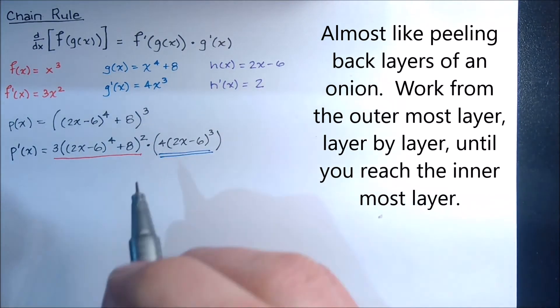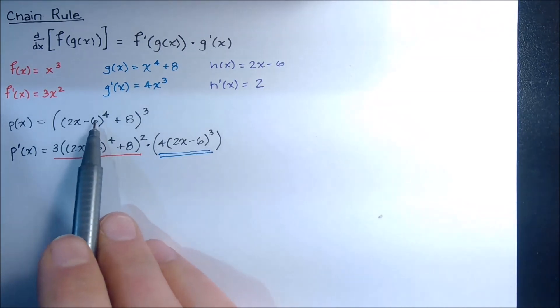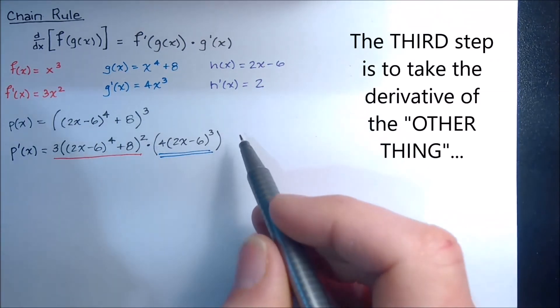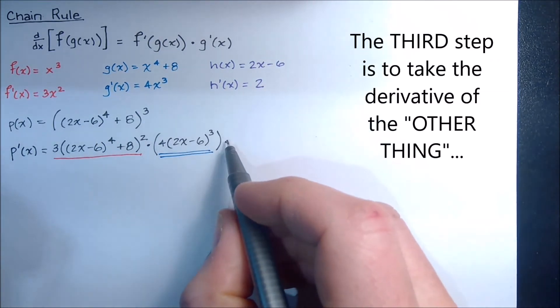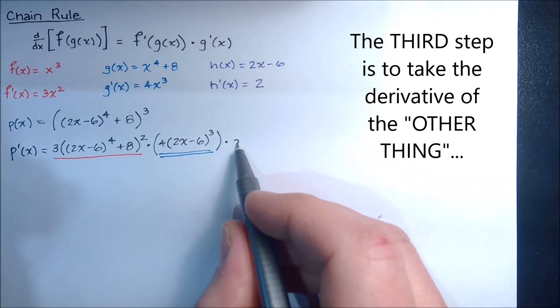So we've got two links in the chain done, but that something, that something to the 4th was, in fact, something. So we have to then take the derivative of that something. What is the derivative of just plain old 2x minus 6? Well, that's 2.